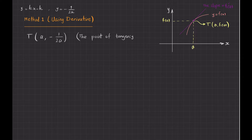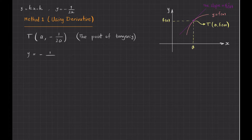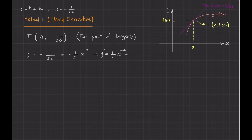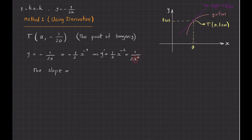I still don't know a, but I can pretend I know T and calculate k as usual. Take the derivative of y equals minus 1 over 2x, which I write as minus 1 over 2 times x to the power of minus 1. Differentiating: minus 1 comes down, giving 1 over 2 times x to the power of minus 2, which I write with a positive exponent as 1 over 2x squared. So the slope of the tangent line is the derivative evaluated at a: 1 over 2a squared.